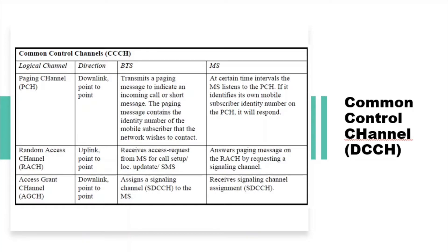When the mobile station has finished analyzing the information on the broadcast channel, it has all the information required to work with the network. However, if the mobile station roams to another cell, it must repeat the process of reading the Frequency Correction Channel, Synchronization Channel, and Broadcast Control Channel in the new cell. If the mobile subscriber then wishes to make or receive a call, the Common Control Channel (CCCH) must be used.